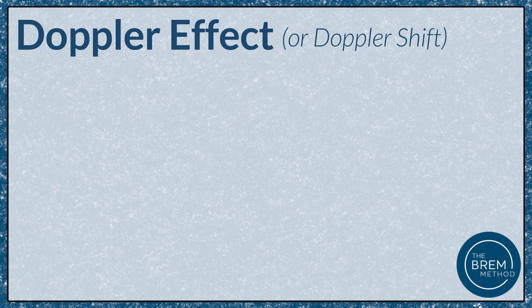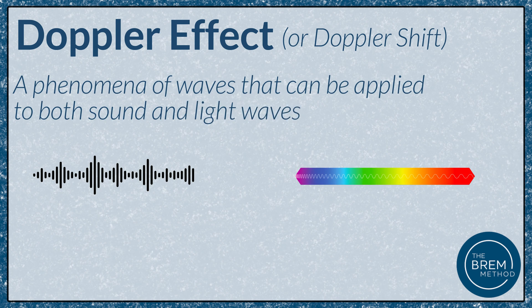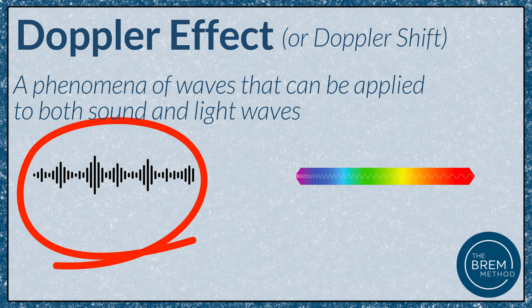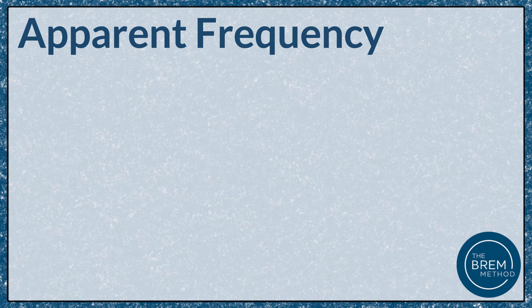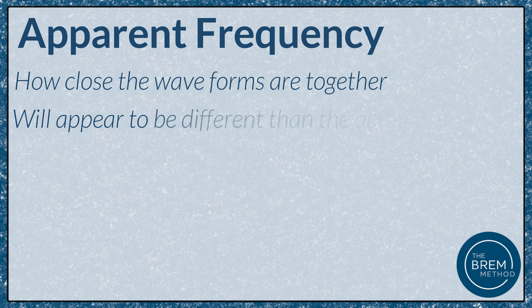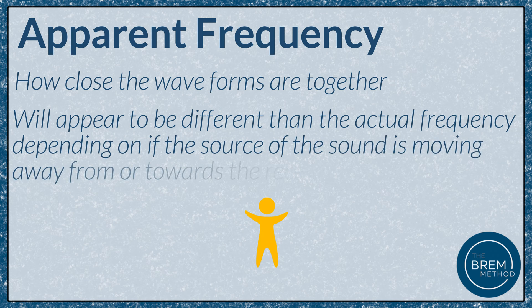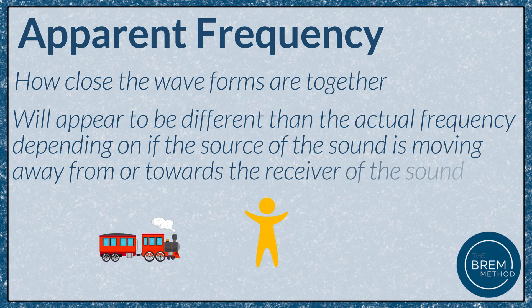The Doppler effect, or Doppler shift, is a phenomenon of waves and can be applied to both sound and light waves, although we'll usually see it with sound on the MCAT. The general idea is that the apparent frequency — or how close the waveforms are together — will appear to be different than the actual frequency depending on if the source of the sound is moving away from or towards the receiver of the sound.